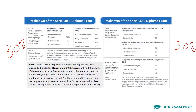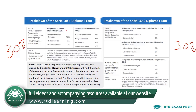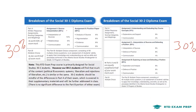Focusing on 30-1, the written component has two assignments. Assignment 1 is often referred to as a source analysis, and Assignment 2 is referred to as your standard essay. The source analysis makes up about 20 percent of your diploma mark, the essay is about 30 percent, and the multiple choice is 50 percent. So out of that 30 percent diploma mark, 15 marks are geared towards the written and 15 marks towards the multiple choice.